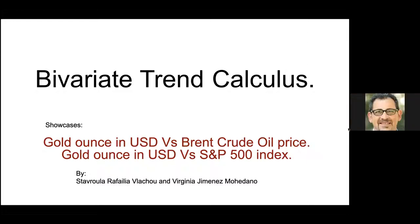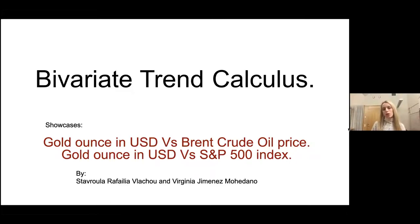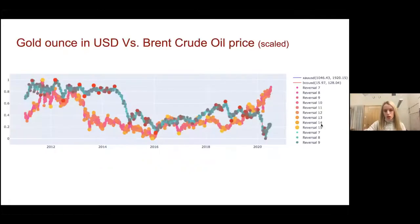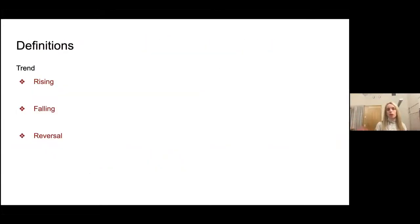I'm going to give a presentation on bivariate trend calculus. We're going to go through two showcases — gold versus oil price and gold versus the S&P 500 index. But first we need to give a brief presentation of the trend calculus algorithm by Andrew Morgan, and we're going to start off with some trend definitions.